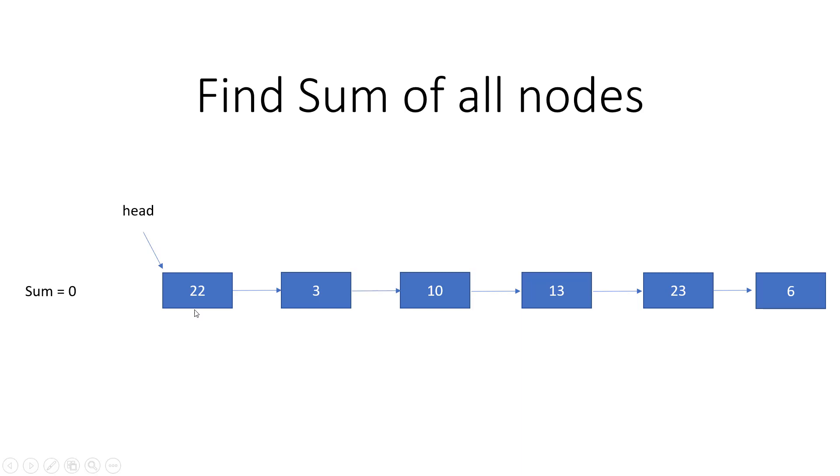We'll start from the head node and take a sum variable with initial value of 0. We'll keep iterating each node of the linked list until it goes to the end, and we'll keep adding to the sum whenever we iterate a node.